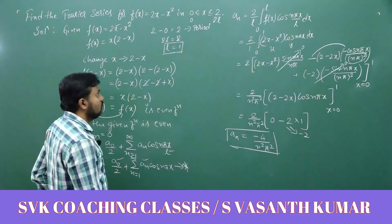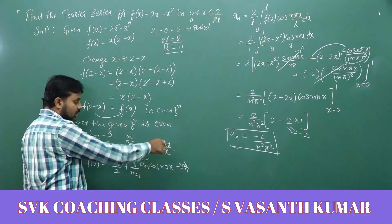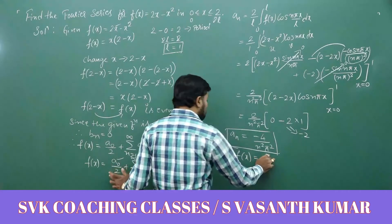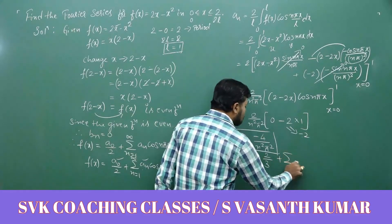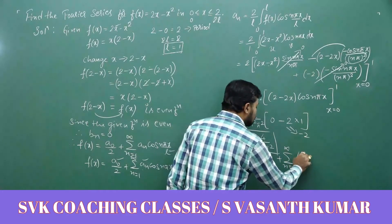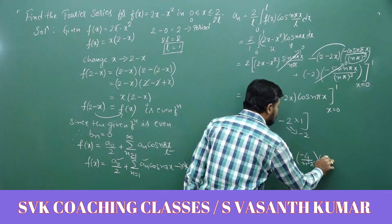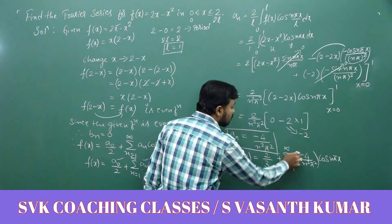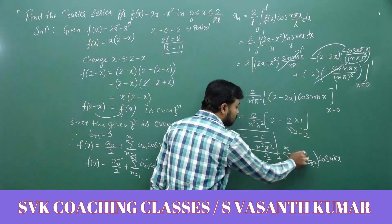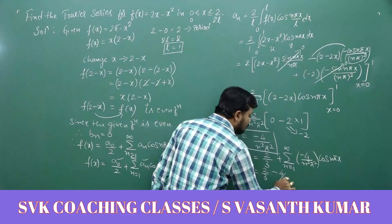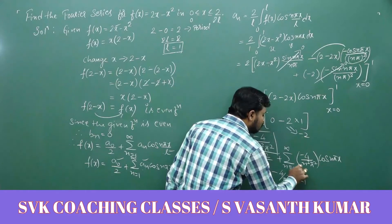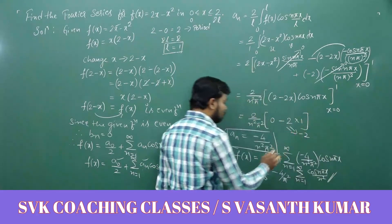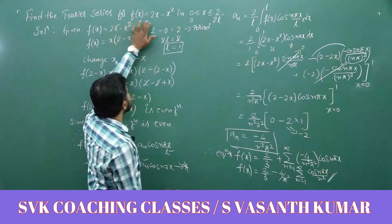Substituting a₀/2 = 2/3 and aₙ = −4/(n²π²) into equation (★), the Fourier series becomes f(x) = 2/3 + Σ [−4/(n²π²)] cos(nπx), or equivalently f(x) = 2/3 − (4/π²) Σ cos(nπx)/n² (n = 1 to ∞). This is the required Fourier series for f(x) = 2x − x².